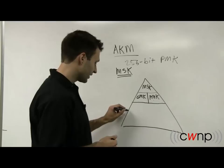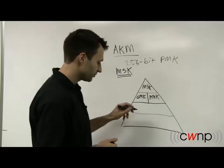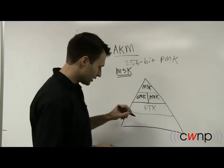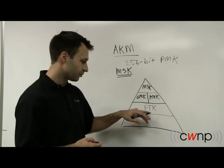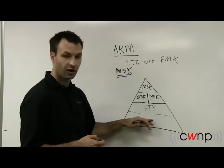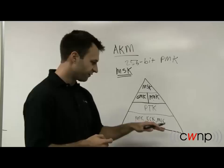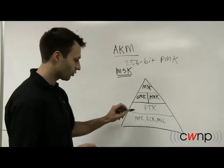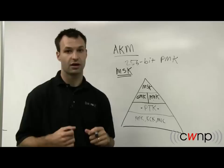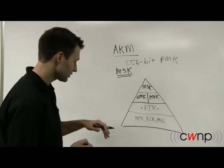This PMK is then used during the four-way handshake to create encryption keys, often called a PTK. The four-way handshake takes this PMK as the source key material and creates a pairwise temporal key, which is actually composed of other keys: a key encryption key, a key confirmation key, and MIC keys — there are actually five total encryption keys used for encrypting data. So a PTK, contrary to popular belief, is not actually the encryption key; a PTK is composed of multiple encryption keys.